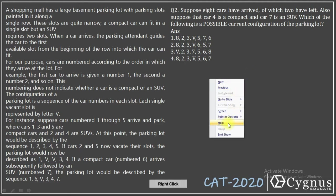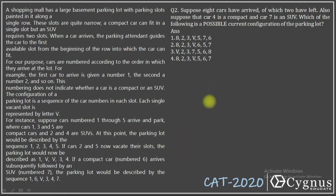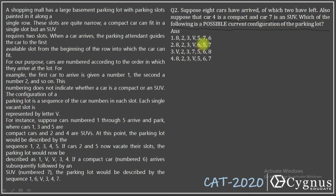Let's look at the second question of this set. It's about possible configuration. Suppose 8 cars have arrived of which 2 have left. Also suppose that car 4 is a compact car and car 7 is an SUV. Which of the following is a possible current configuration of the parking lot?